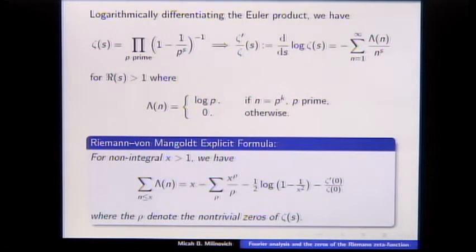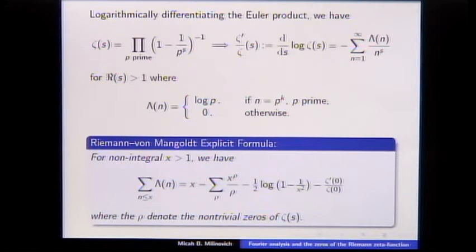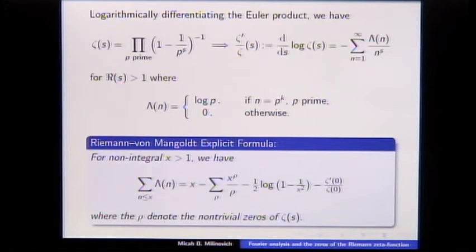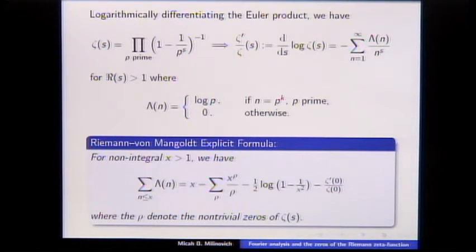There's also a sum over the trivial zeros that becomes a logarithm, and as x gets big this tends to zero. You can get a hold of sums over primes and prime powers and write it as what we expect the sum to be, and then there's a correction where the zeta zeros appear. It's explicit in the sense that we can relate the behavior of the primes explicitly to the behavior of the zeros. The prime number theorem was proved from a truncated version of this.